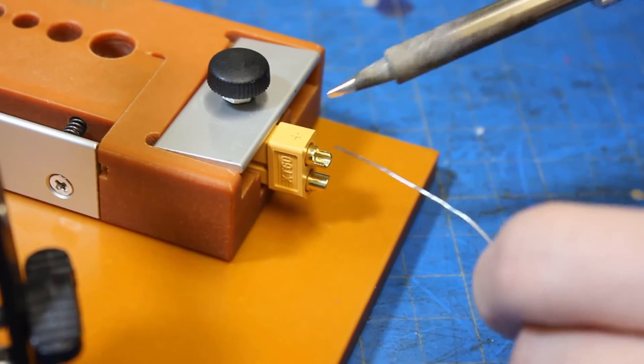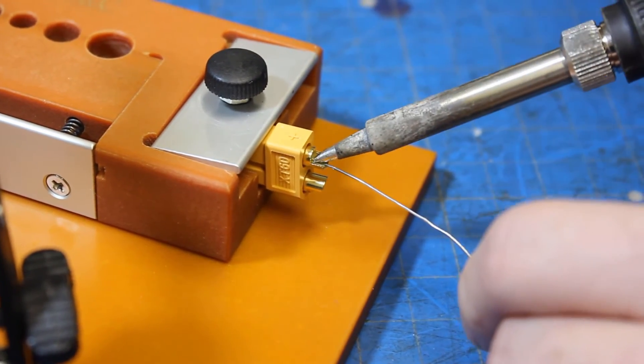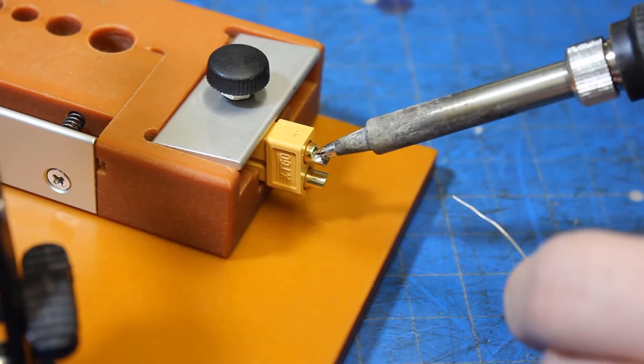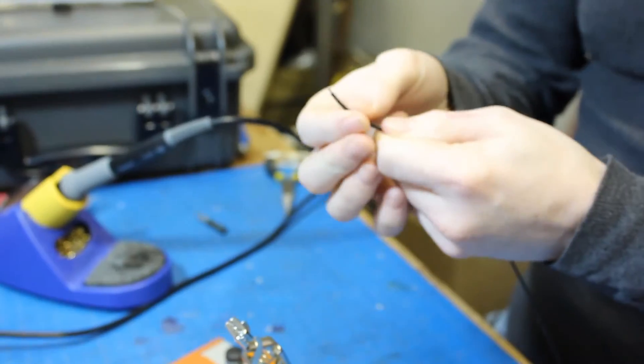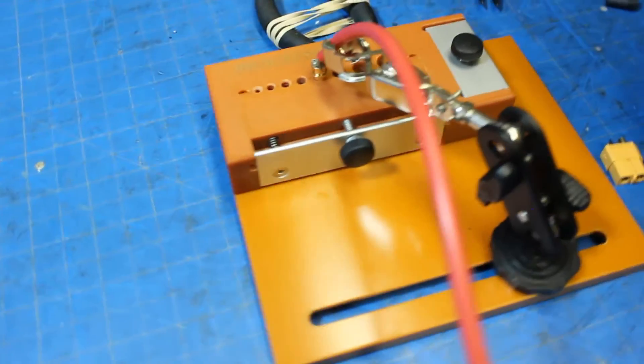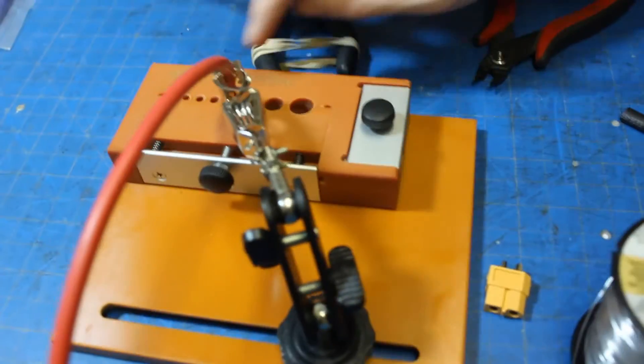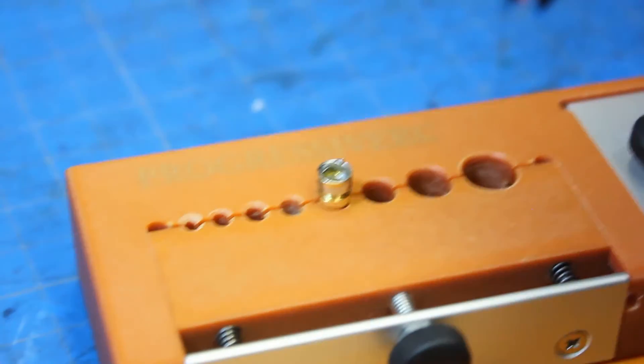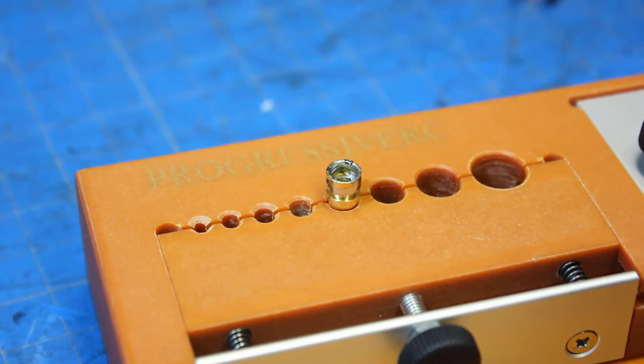If you do want to invest in getting some really good equipment, we recommend getting a solid soldering stand. The Progressive RC soldering stand is made out of Delrin so it's going to last through all of the extreme heat changes, and it has a really helpful helping hand on it as well as several other little parts to hold different sized bullet connectors.